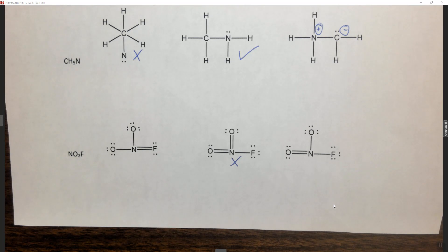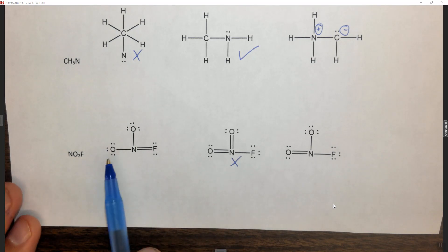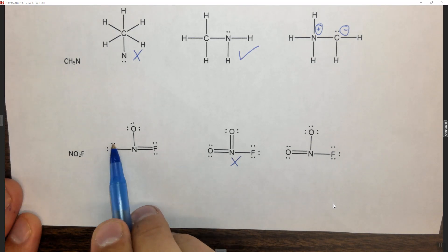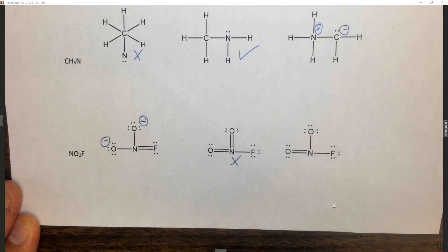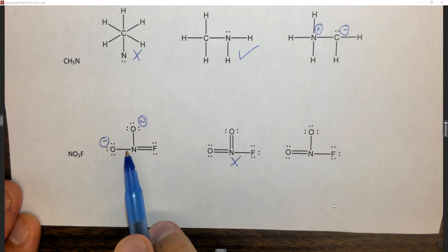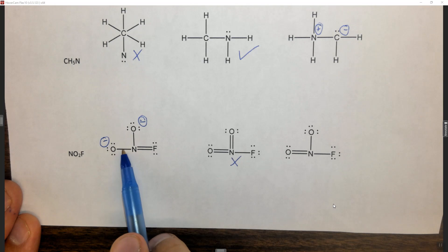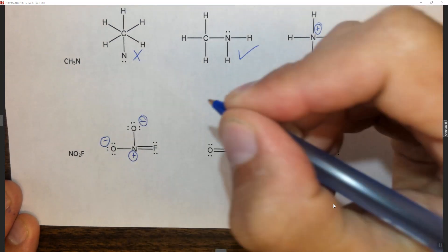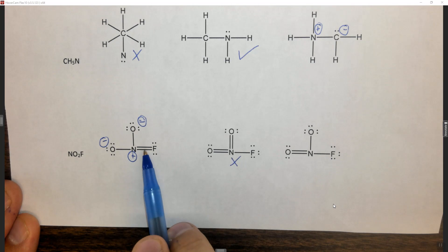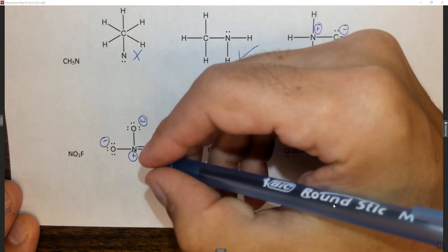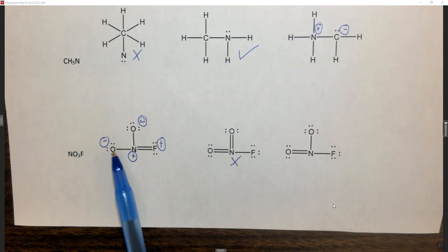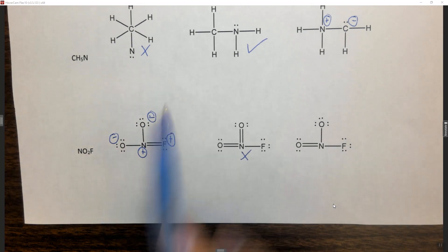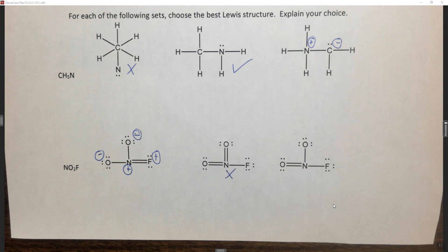Looking at this structure first, oxygen wants to have six electrons around it and has one, two, three, four, five, six, seven — it's negative. This oxygen is exactly the same, it's negative. Nitrogen wants to have five and has one, two, three, four — making it positive. Fluorine wants to have seven and has one, two, three, four, five, six — it's missing an electron, making it also positive. So in this Lewis structure, everything has a formal charge. Note that you have two pluses and two minuses, so it does come out neutral, but every atom has a formal charge.